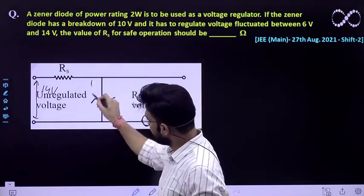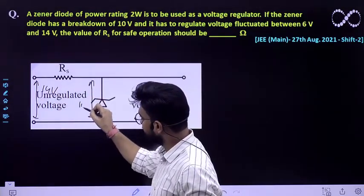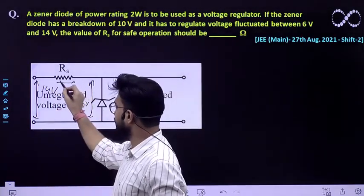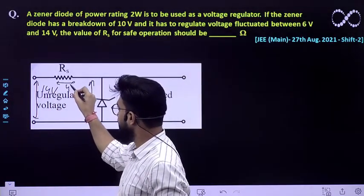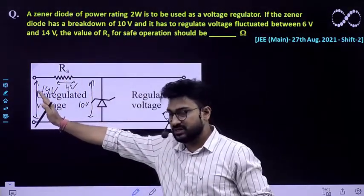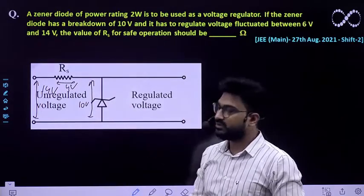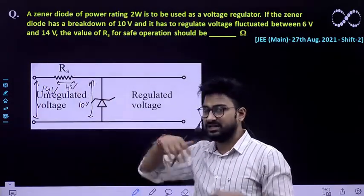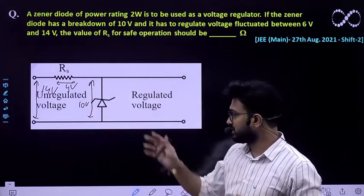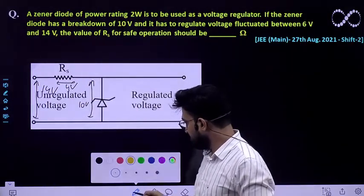So Zener diode having a breakdown voltage of 10 volts, so it has been consumed over here. So rest of the 4 voltage would be the potential developed across this resistor at 14 voltage situation. At this situation what would be the value of this resistance that you need to find out for the safest working of this appliance or diode.